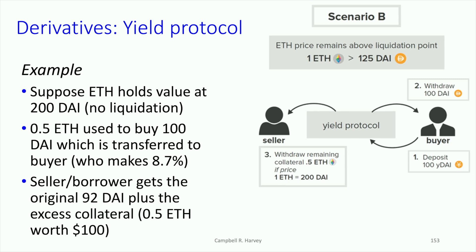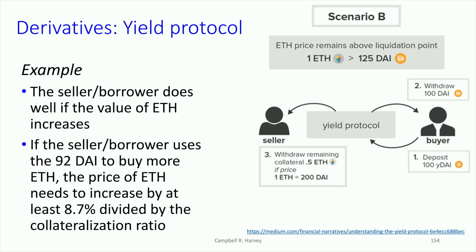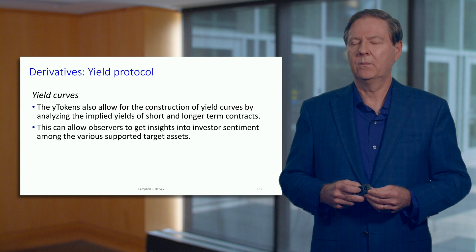So again, these are the mechanics — one is liquidation, one is no liquidation. What happens to the seller greatly depends upon the price of Ether, because they've pledged Ether as collateral. For the buyer, it's straightforward: the buyer is going to get 8.7% and that's it. From the point of view of the buyer, this is a way to lock in a rate of return.